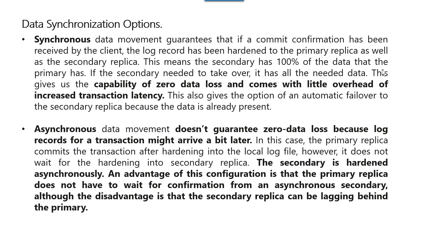SQL Always-On provides two data synchronization options: synchronous and asynchronous. In synchronous data synchronization, this provides zero data loss but at the same time we have some overhead of increased transaction latency. How the synchronous option works: whenever data is committed at the primary level, all the secondary replicas synchronize this transaction, and only the moment the secondary replicas synchronize it is the transaction committed to the primary. So it has zero data loss but has to wait for secondary replicas to commit, which is why it has increased transaction latency.